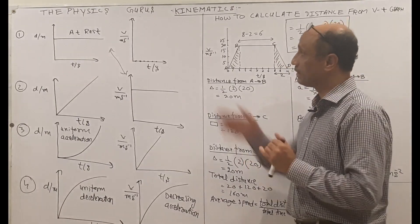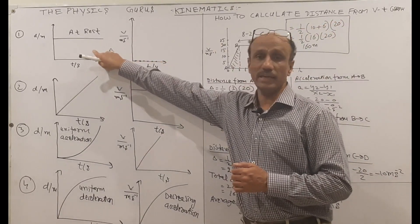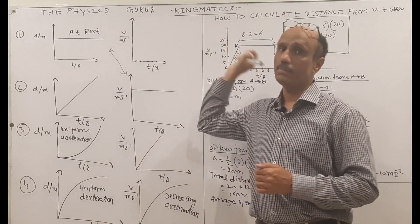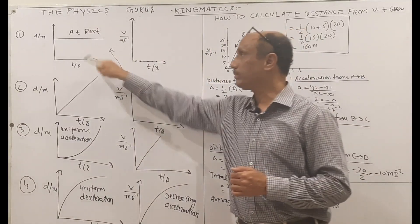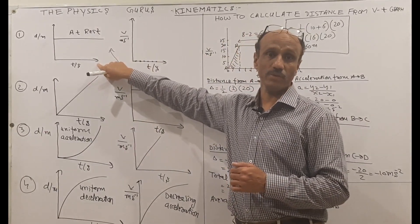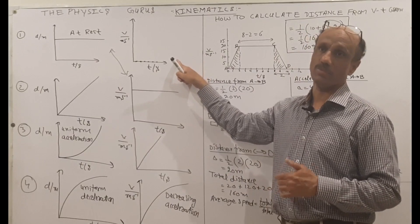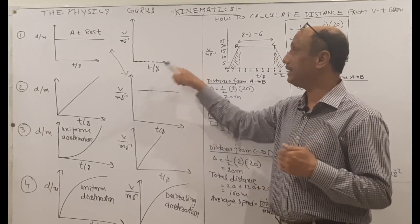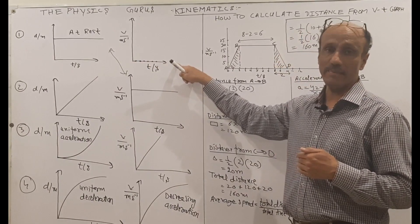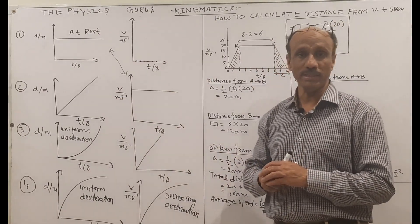Graph number one: when the object is at rest, in the distance-time graph the line will be a straight one, but it will not start from the origin — this line will be parallel to the time axis. For the same scenario, when the object is at rest in the VT graph, the straight line will be on the time axis.